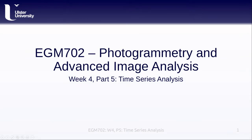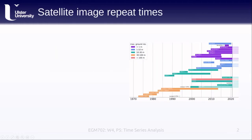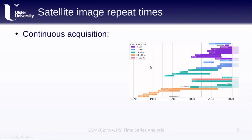Hello and welcome to EGM 702, week 4, part 5: time series analysis. When we look at our satellite images or different sensors and satellite missions that we have available, and we start to think about the temporal resolution of those sensors, we have a number of different sensors that are acquiring continuously — that is, every time they pass over a point on the ground, they are taking an image of it.